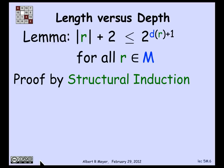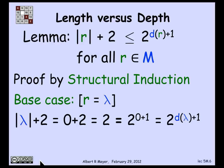I want to prove the following property of the depth of strings in m: that the length of a string r plus 2 is less than or equal to 2 to the power of depth of r plus 1, and I want to prove this holds for all strings r of matched brackets by structural induction. For the base case, the length of r is 0, so length of r plus 2 is 2, which equals 2 to the 0 plus 1, equal to 2 to the depth of the empty string plus 1. So the inequality holds as an equality in the base case.